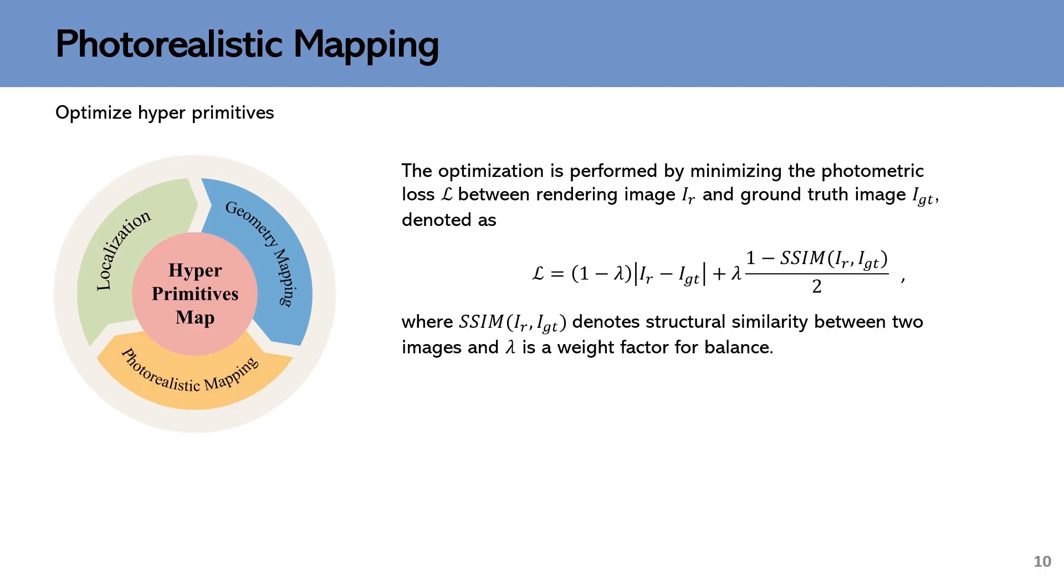The photorealistic mapping thread is responsible for optimizing hyper primitives by minimizing the photometric loss between rendered and input images. To achieve high-quality mapping online without relying on dense depth information, we further propose two algorithms.